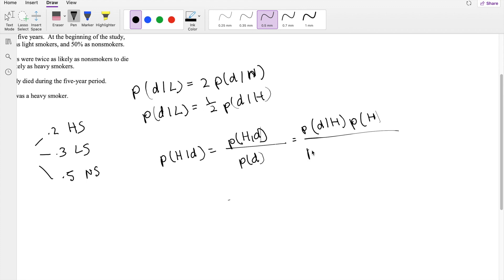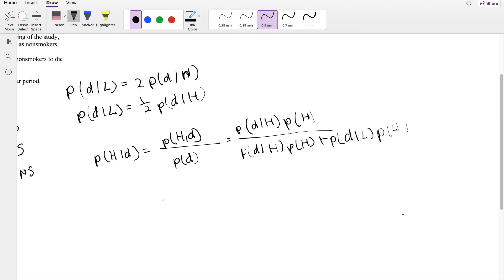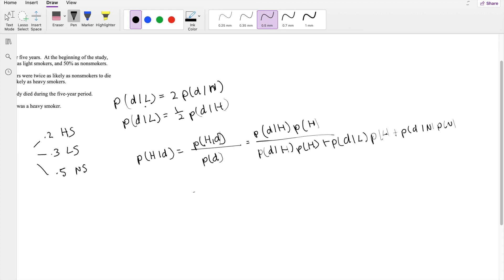we just have to sum it up. So probability of dead given H times the probability of H plus the probability that they died given they were light smoker times the probability that they were light smoker, plus the probability that they died given they were non-smoker times the probability that they were non-smoker. I'm going to put everything in terms of L because everything has an L in it.